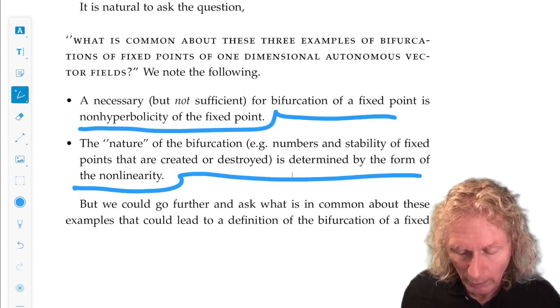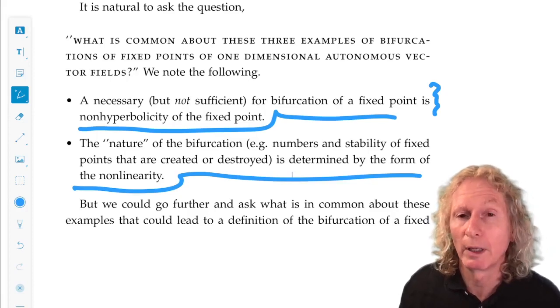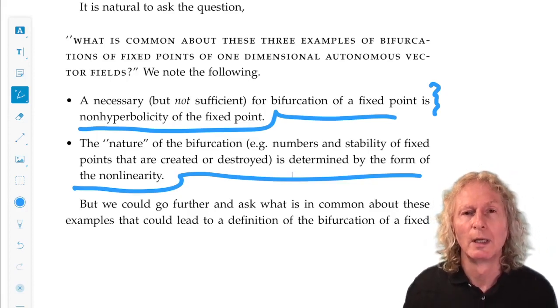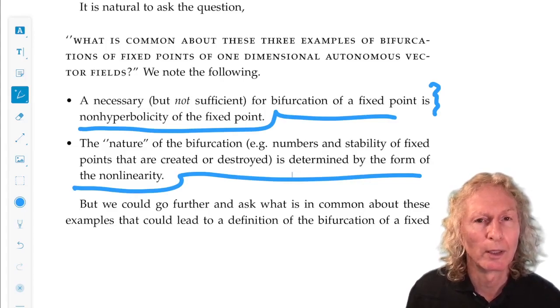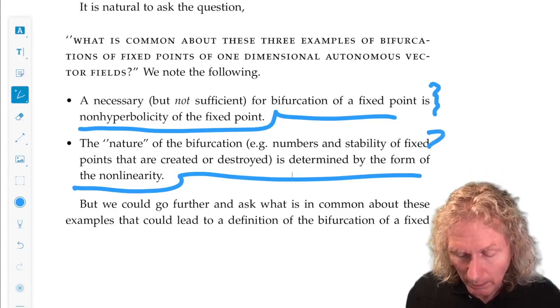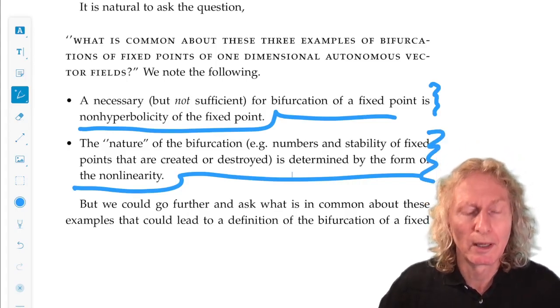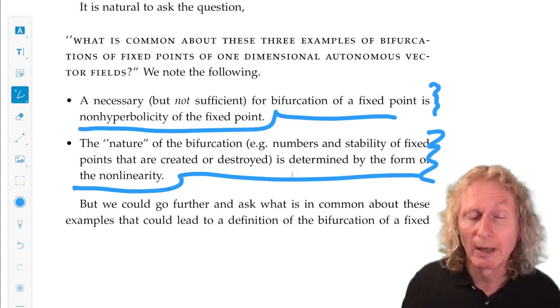So, whether or not bifurcation can occur for a fixed point or equilibrium point, we need to check the linear behavior, whether it's hyperbolic or not. But the evolution of the fixed points from the bifurcation point is determined by the non-linear terms.